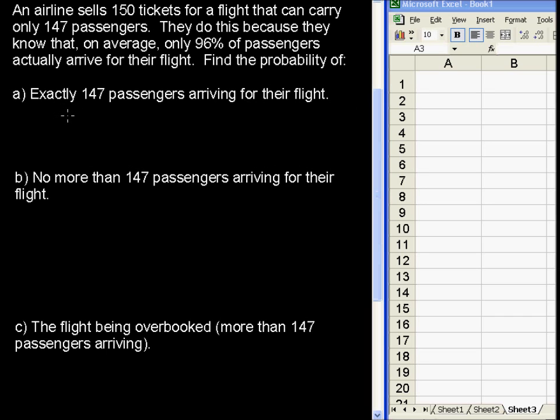This is a binomial distribution because either the passengers arrive or they don't. So two choices, two different possibilities, makes it a binomial probability. And we can use Excel to calculate all of these. But first we have to determine exactly what's being asked. And what is being asked here is for exactly 147 passengers arriving for their flight. So in notation that would be probability that X equals 147.